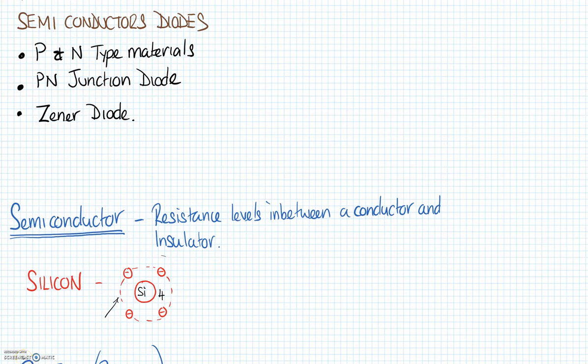Hello everybody, in this session we're going to look at semiconductors and diodes. We're going to look at the P and N type materials, what P and N actually means, how the P and N working together makes a diode, and we're going to look at the Zener diode.